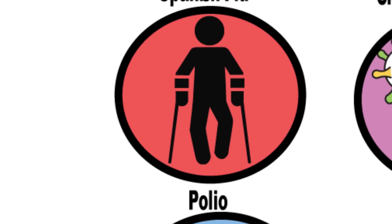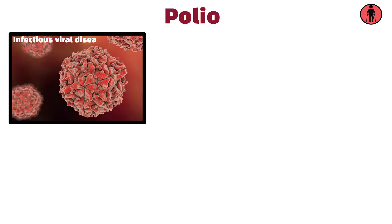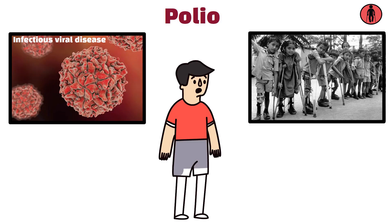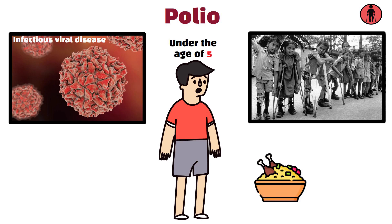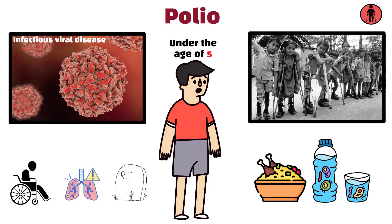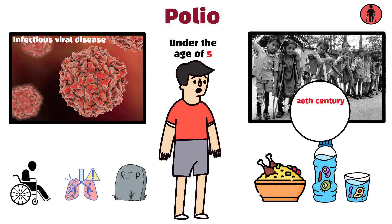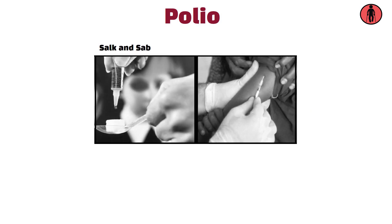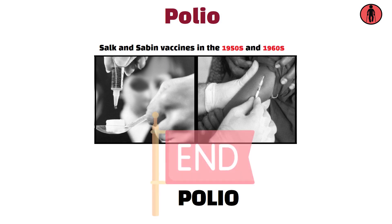Polio, 20th century. Polio is a highly infectious viral disease that primarily affects children under the age of five. Spread through contaminated food or water, it can cause paralysis, respiratory failure, and death. Major polio epidemics occurred throughout the 20th century, particularly in the 1940s and 1950s. The development of the Salk and Sabin vaccines in the 1950s and 1960s has nearly eradicated polio worldwide.